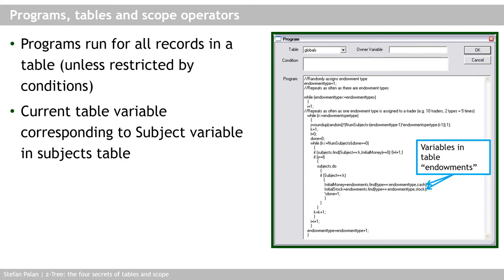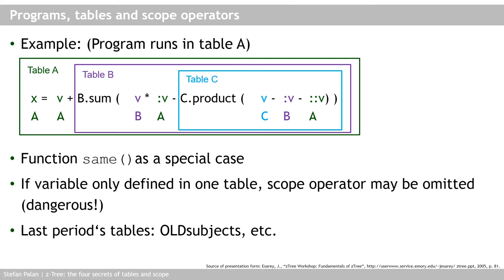So I've stepped from the endowments table to the subjects table and compare the 'type' variable in endowments to the 'endowment_type' variable in the subjects table. This command then returns the cache value of the record in the endowments table where 'type' equals the endowment type in the subjects table. Now this is my final slide on the topic of programs, tables, and scope operators, and it's a nice example of a line of code that illustrates all the different table and scope steps we can take.